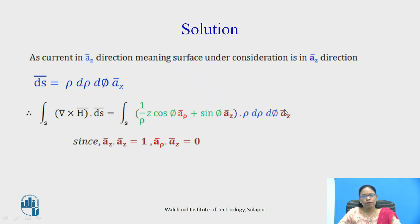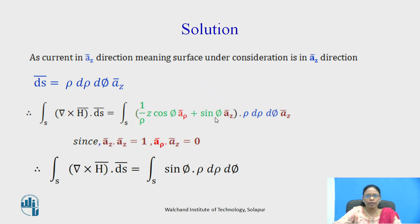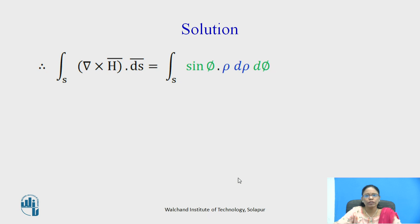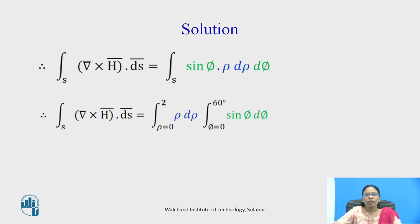Taking the dot product of curl h-bar with ds-bar: a_z · a_z = 1, so the sinφ · a_z term contributes. But a_ρ · a_z = 0, so the first term (z cosφ/ρ) · a_ρ vanishes. The remaining integral is the surface integral of sinφ · ρ dρ dφ, which can be separated as ∫ρ dρ from 0 to 2, times ∫sinφ dφ from 0 to 60°.